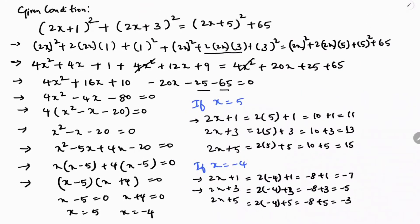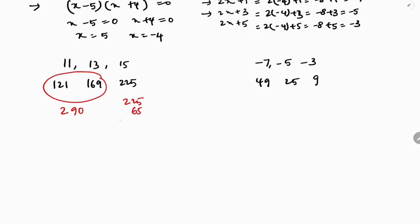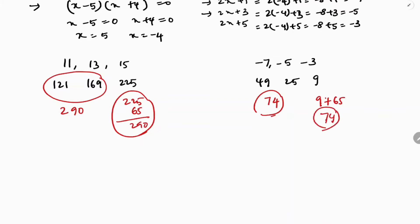Verification: squaring 11, 13, 15 gives 121, 169, 225. Sum of first two: 121+169 = 290; and 225+65 = 290. ✓ For −7, −5, −3: squares are 49, 25, 9. Sum of first two: 49+25 = 74; and 9+65 = 74. ✓ So the answers are 11, 13, 15 or −7, −5, −3.